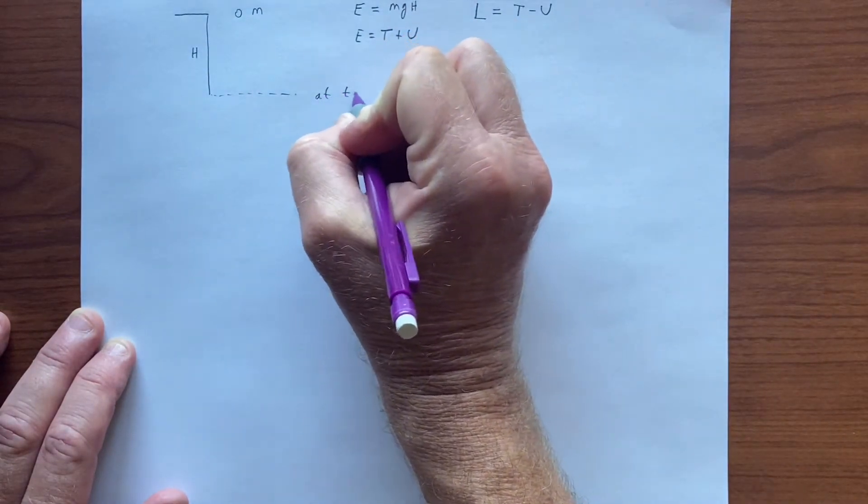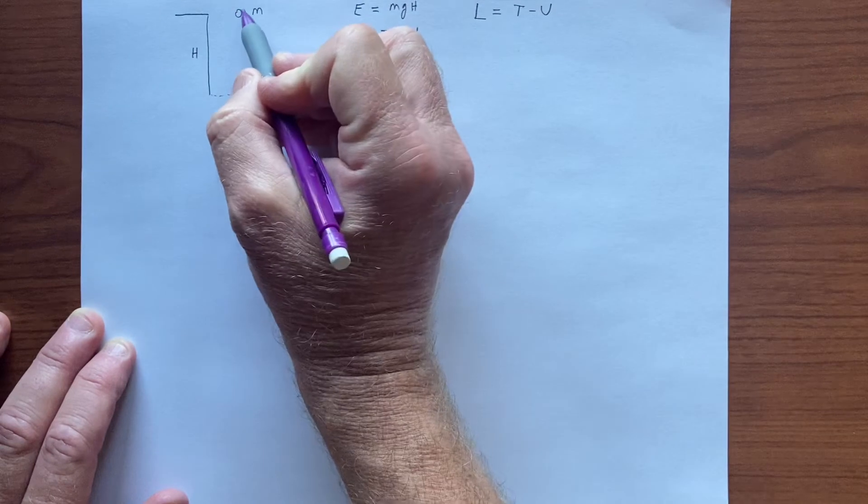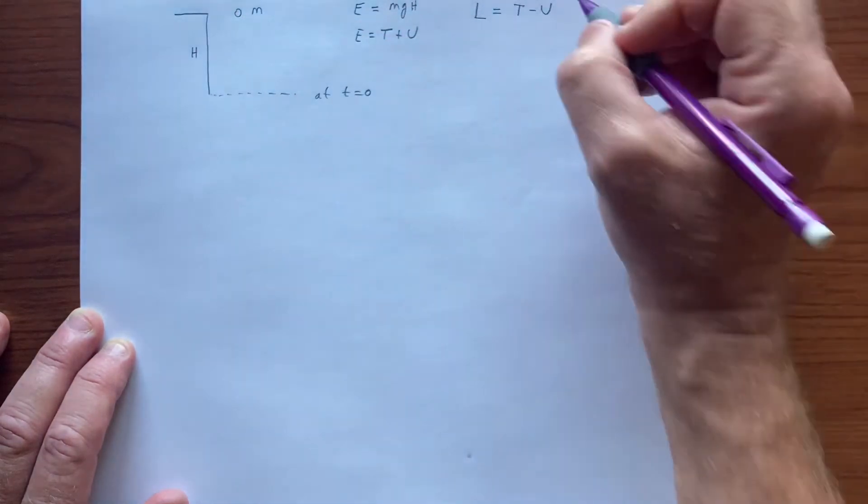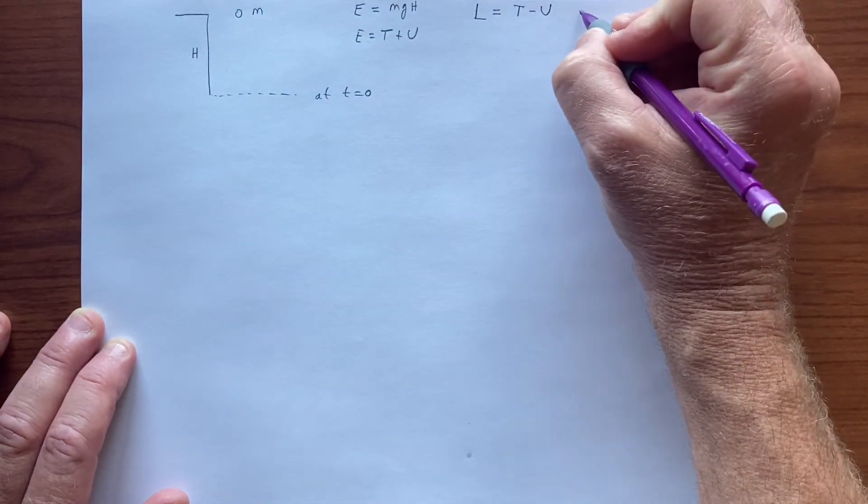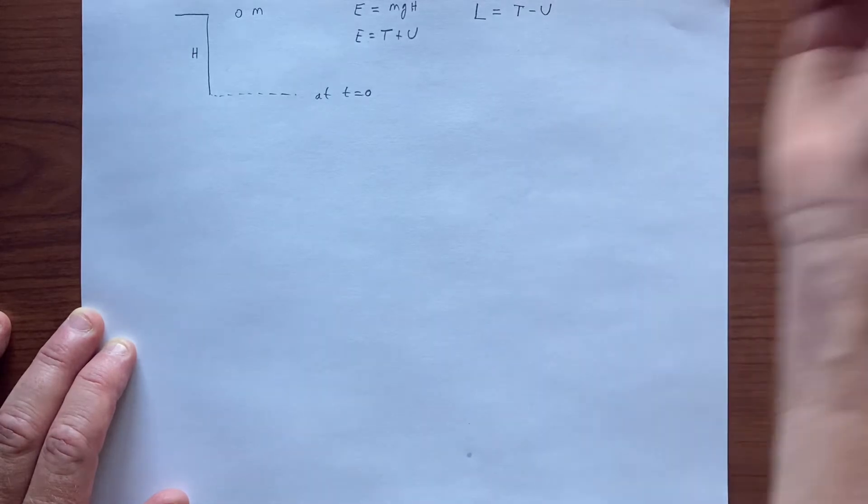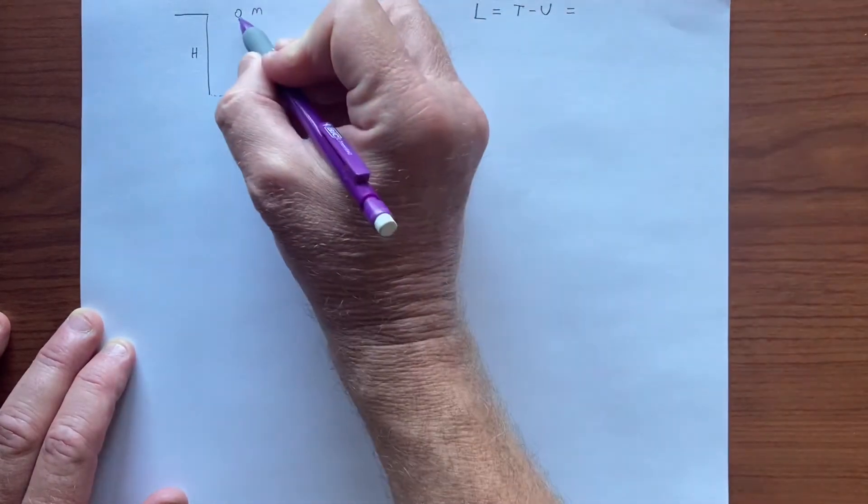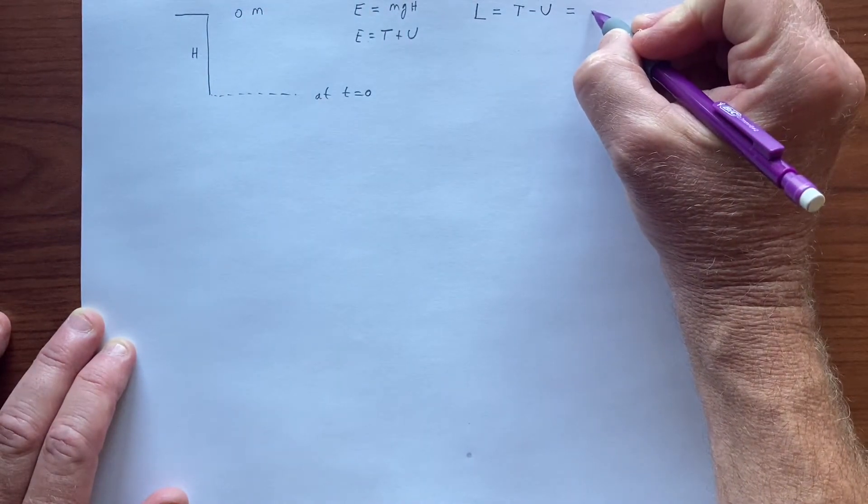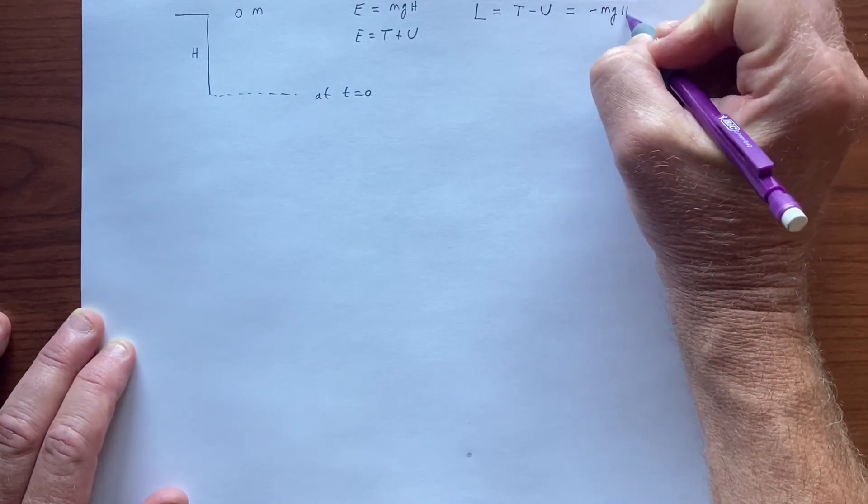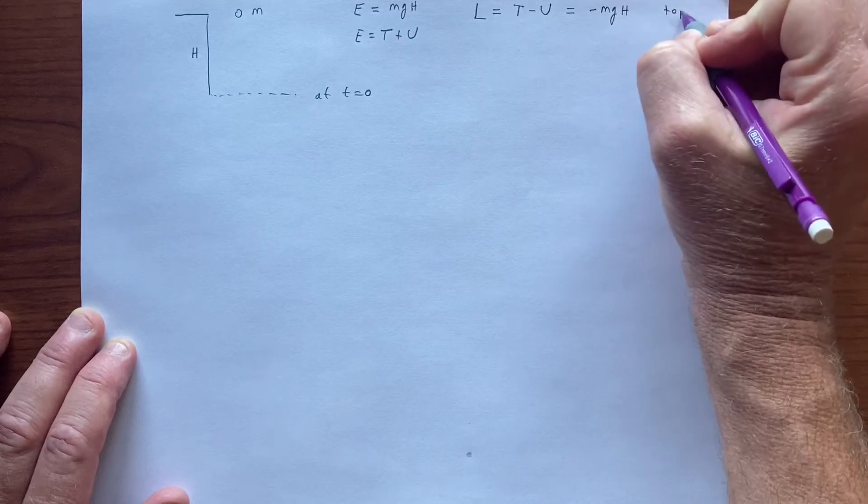So when we are at t equals zero, beginning and we let the object go, at t equals zero this becomes, there's no kinetic, it's all potential, so we have minus mgh, so we are at the top.